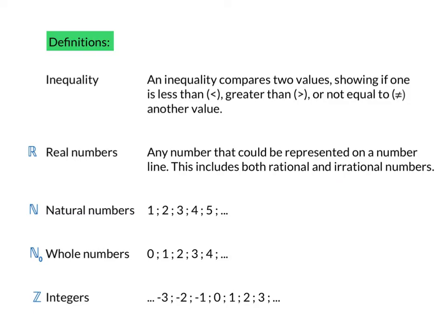Next, natural numbers are your counting numbers: 1, 2, 3, 4, 5, and so on — no fractions or parts of numbers, only whole numbers. Whole numbers are the natural numbers including 0. Integers are the whole numbers including the negative numbers, but there are no part numbers — so negative 1.5 is not an integer. The symbols often used are: R for real numbers, N for natural numbers, N with subscript O for whole numbers, and Z for integers.